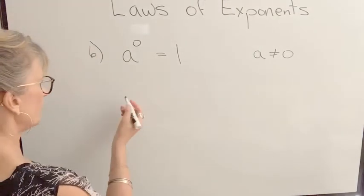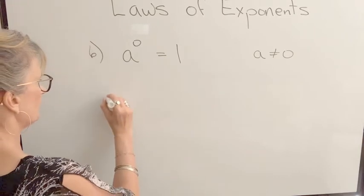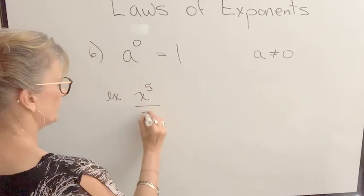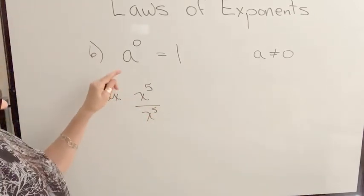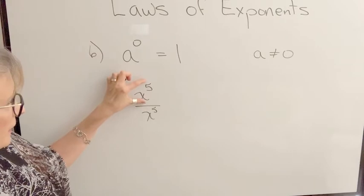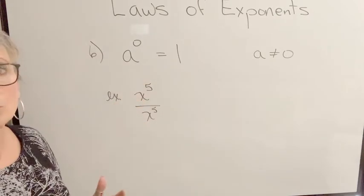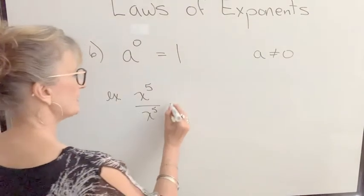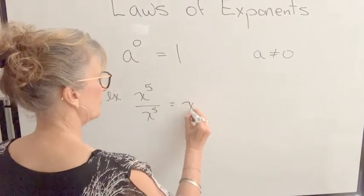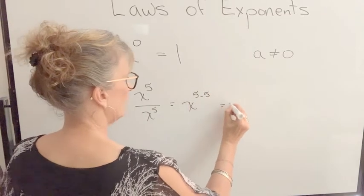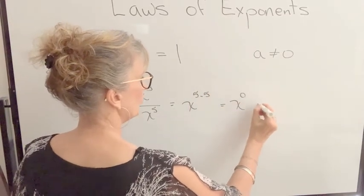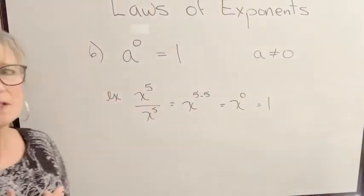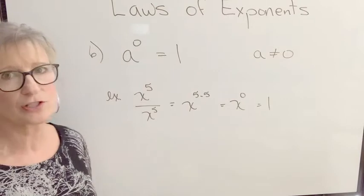And I think maybe the easiest way of doing that is if I had x to the 5th divided by x to the 5th. We know that anything divided by itself is equal to 1. So we know that's equal to 1, but let's go back to rule number 2 that says this is also equal to x to the 5 minus 5. And that's going to be x to the 0. And because we know this quotient is equal to 1, this sort of illustrates. This is not a proof but it is a fairly simple illustration of why that works.